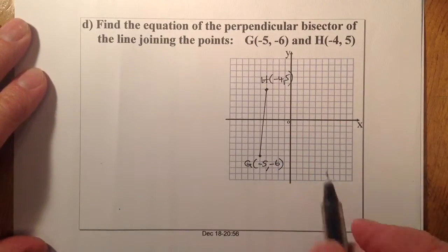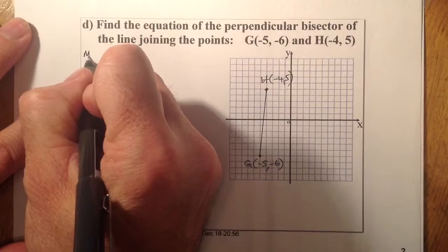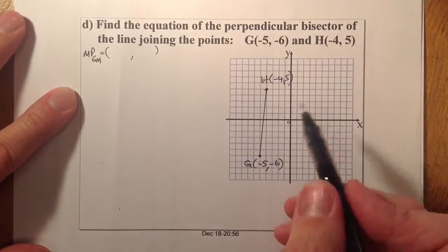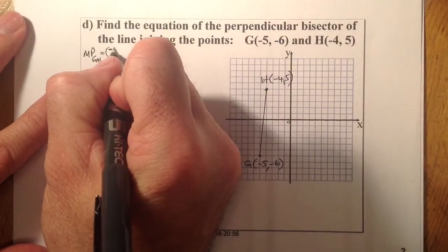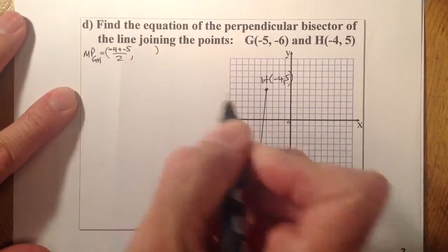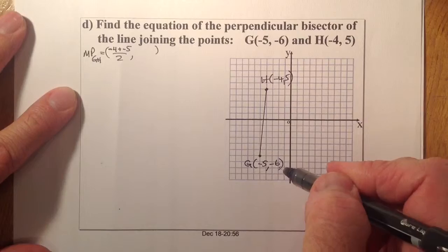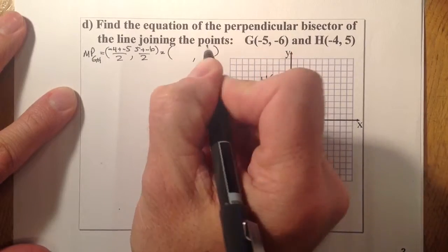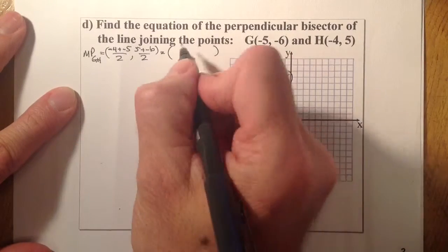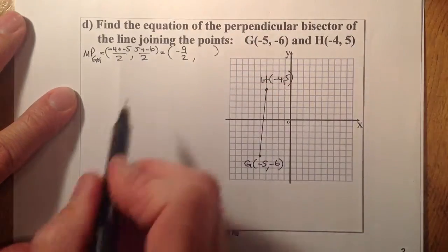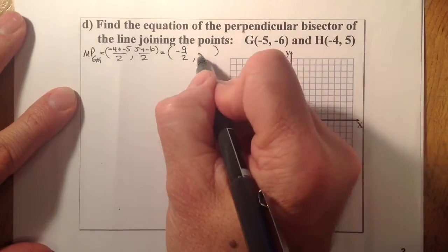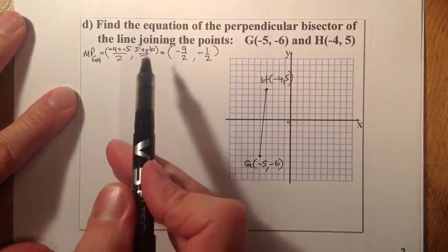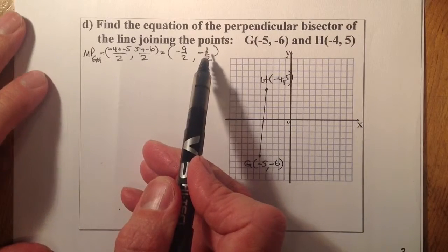Now we're looking at finding the midpoint. The midpoint of GH: the mean of x-coordinates is minus 4 plus minus 5 all over 2, and the mean of y-coordinates is 5 plus minus 6 all over 2. That gives minus 9 over 2 for x, and minus 1 over 2 for y. So the midpoint is (-9/2, -1/2).